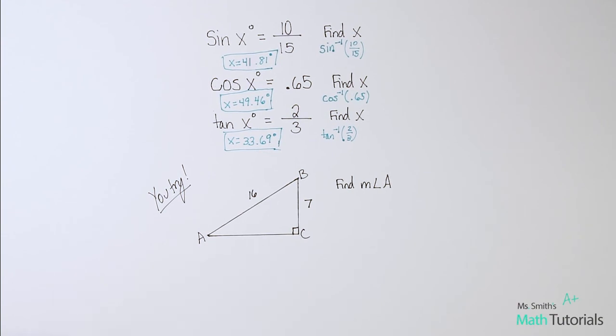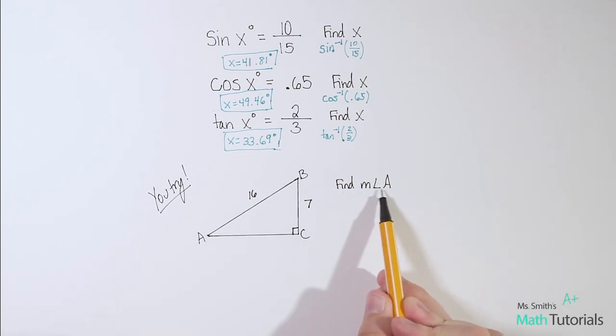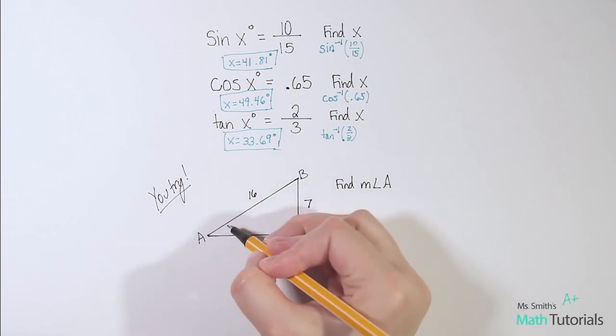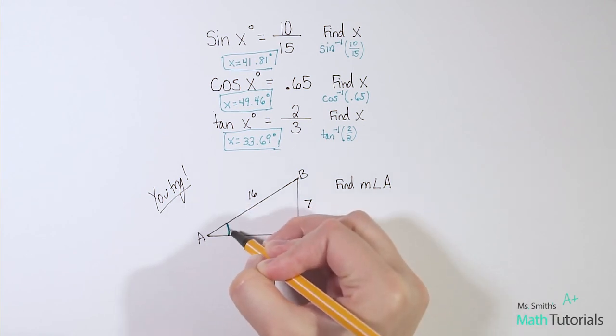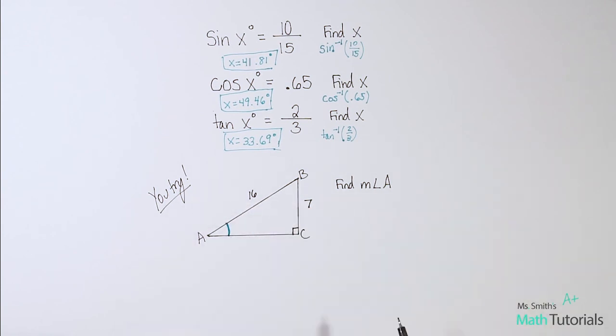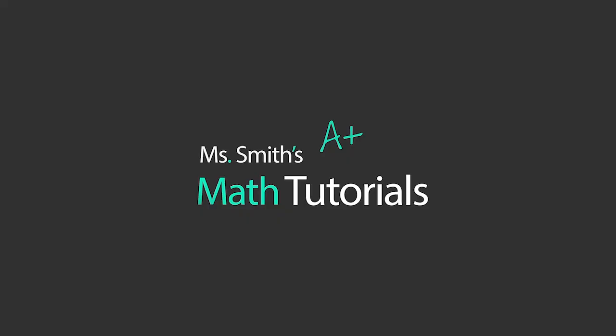Now I want you to try one on your own. This is an inverse trig function question — they want you to find the measure of angle A. Analyze what you've been given and the placement of the sides, and that'll tell you what trig function to use. Then use your inverse. I will post the answer in the video description below. This has been Ms. Smith's Math Tutorials.